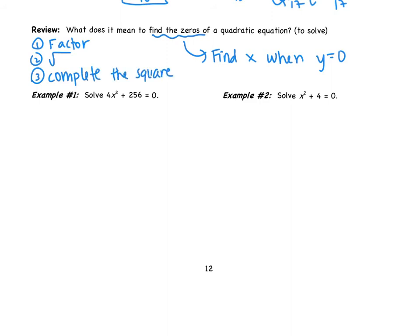Looking at example number one, we have an x squared but no x, so we're going to do the square root method. We got to get that x squared alone, so subtract 256, then we're going to divide by 4. We get negative 64.